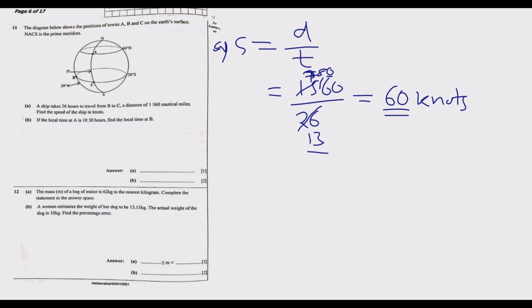Question b reads: if the local time at A, which is 60 degrees north, is 10:30 hours, find the local time at B. B is on the latitude 30 degrees south but longitude is 30 degrees west. Then A is on the prime meridian.